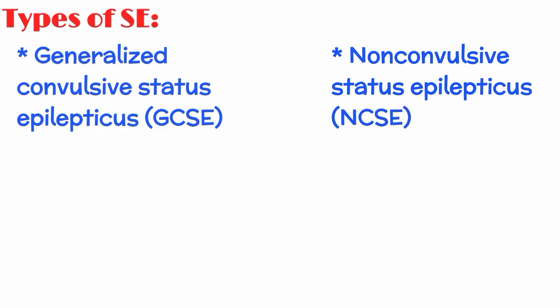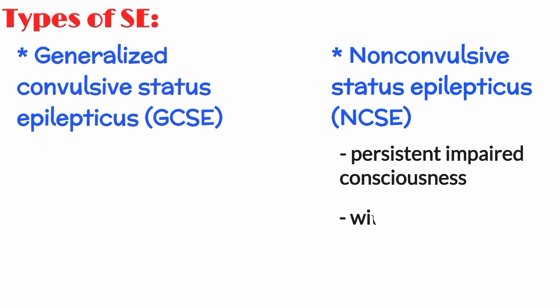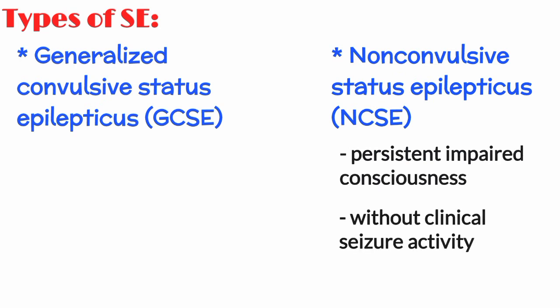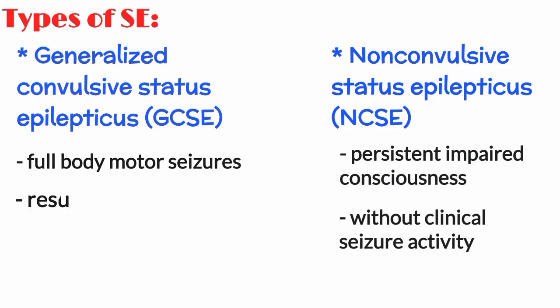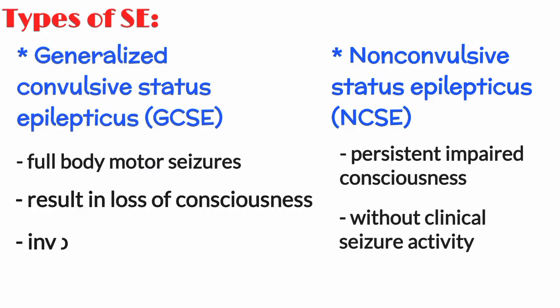Status epilepticus can present as generalized convulsive status epilepticus and non-convulsive status epilepticus. Non-convulsive status epilepticus is characterized by persistent impaired consciousness without clinical seizure activity, while generalized convulsive status epilepticus is characterized by full body motor seizures resulting in loss of consciousness, involving the entire brain.